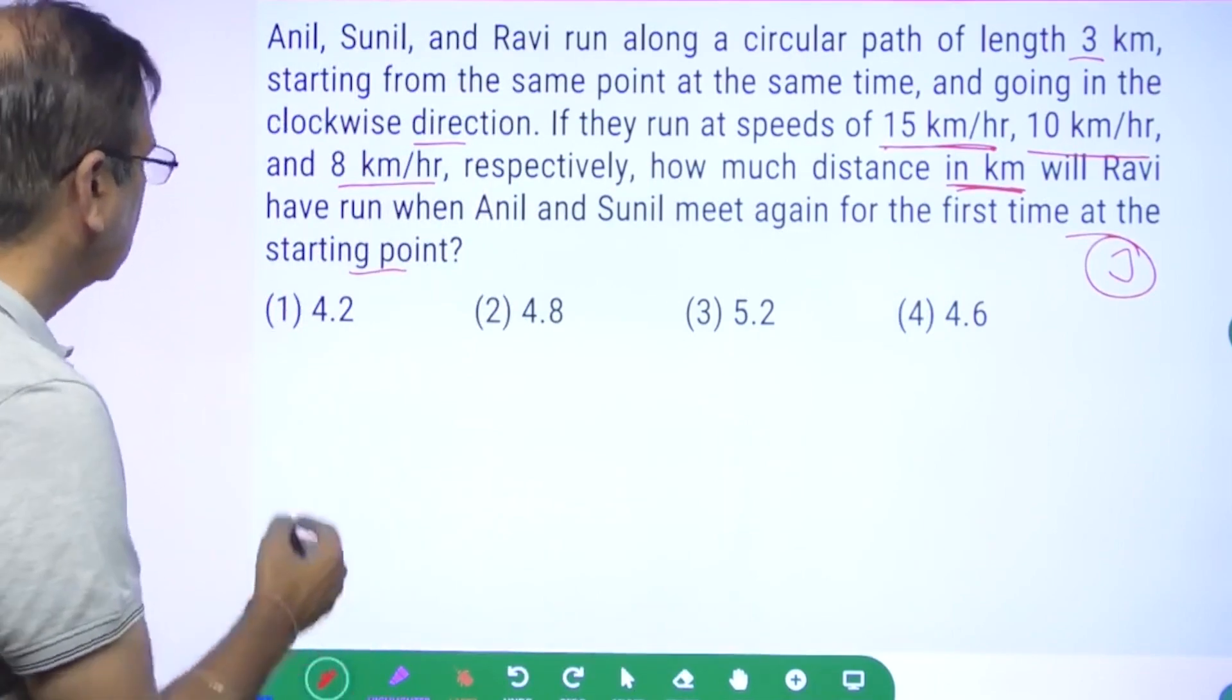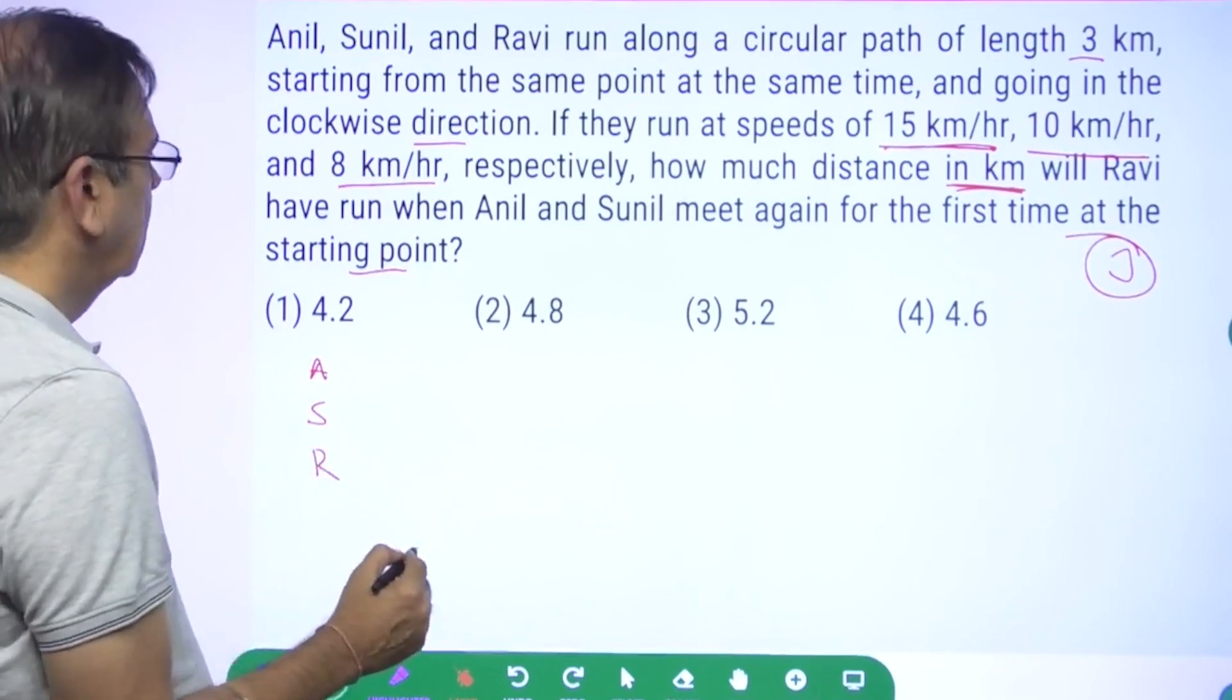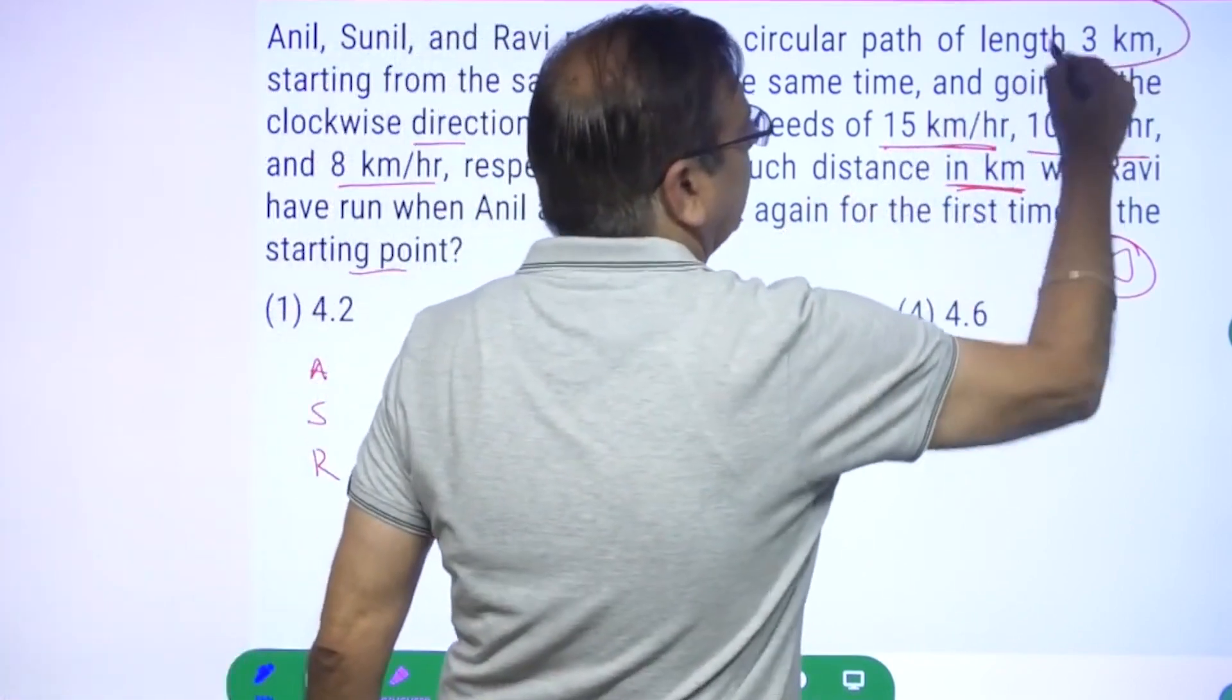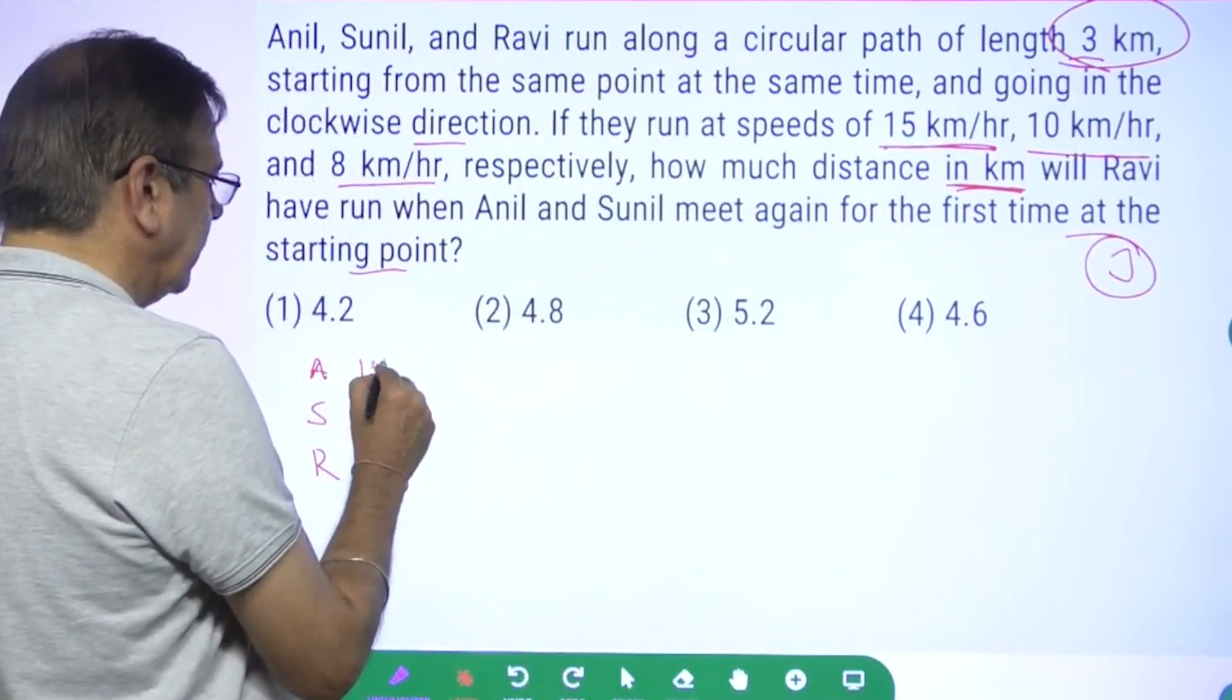Let's look at this: Anil, Sunil, and Ravi run on a circular path of 3 kilometers, starting from the same point, at speeds of 15 km/hr, 10 km/hr, and 8 km/hr respectively.